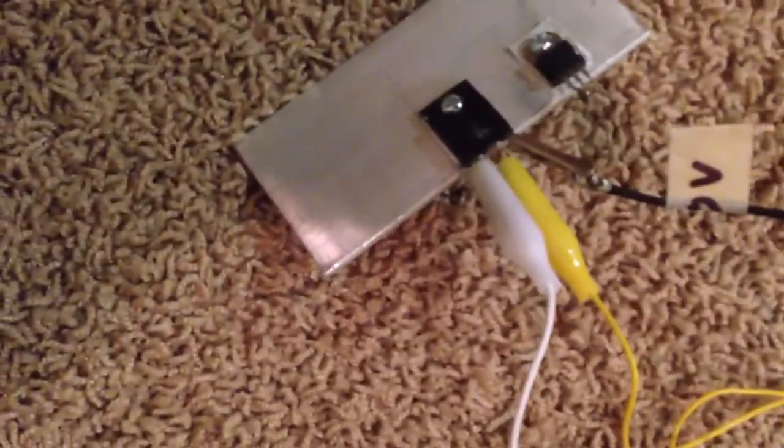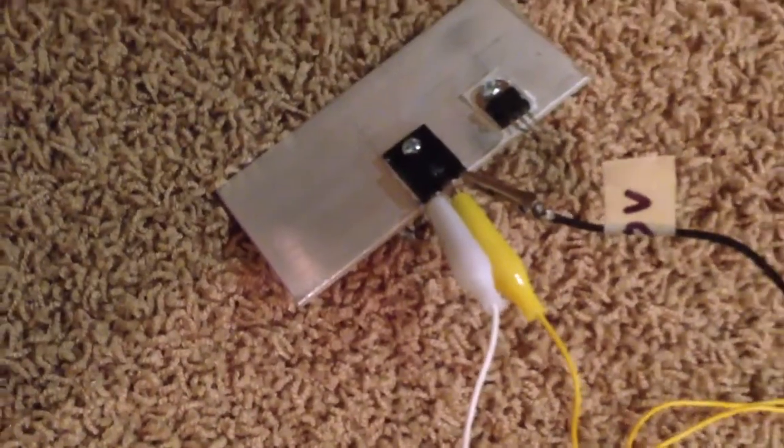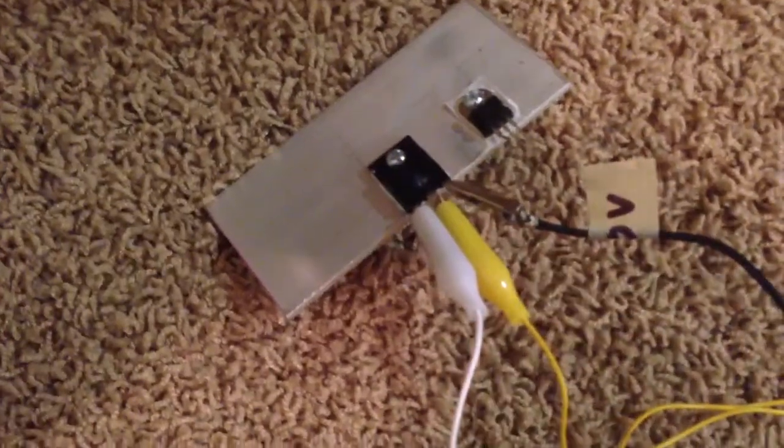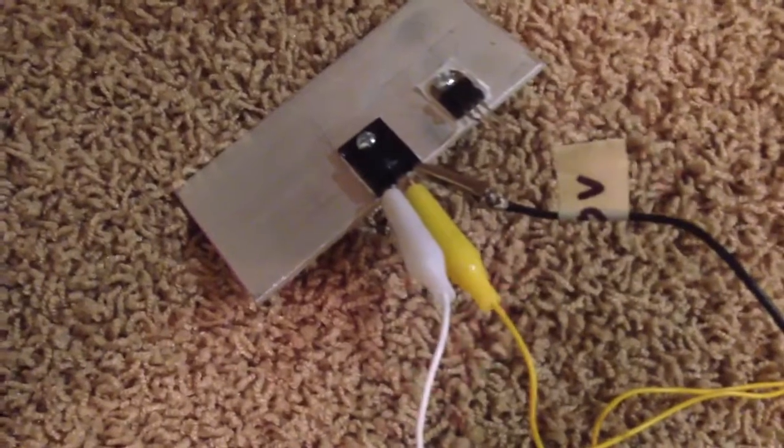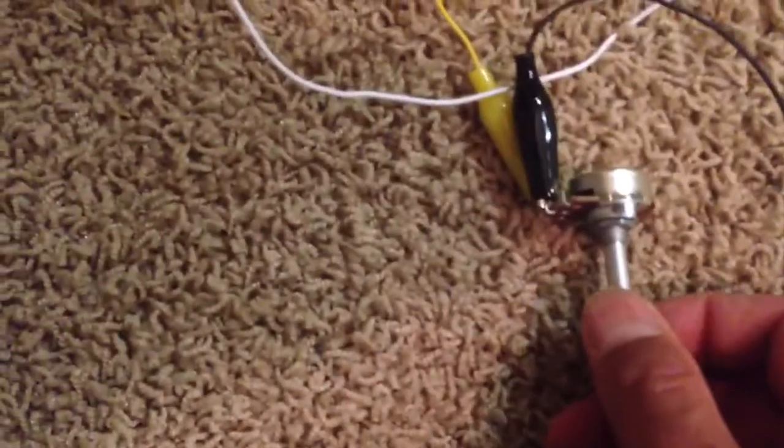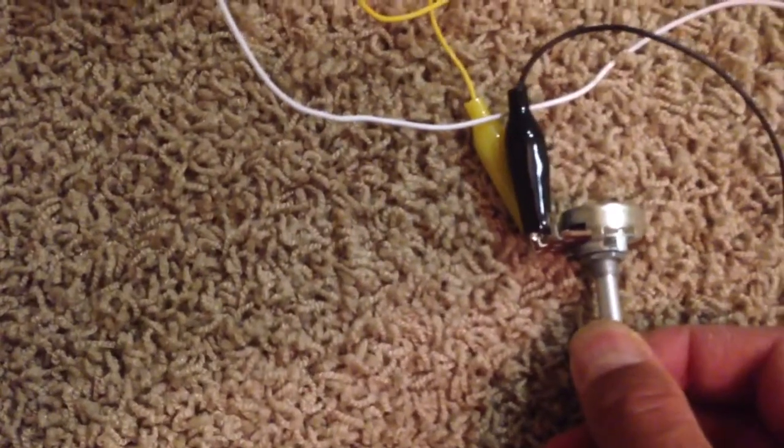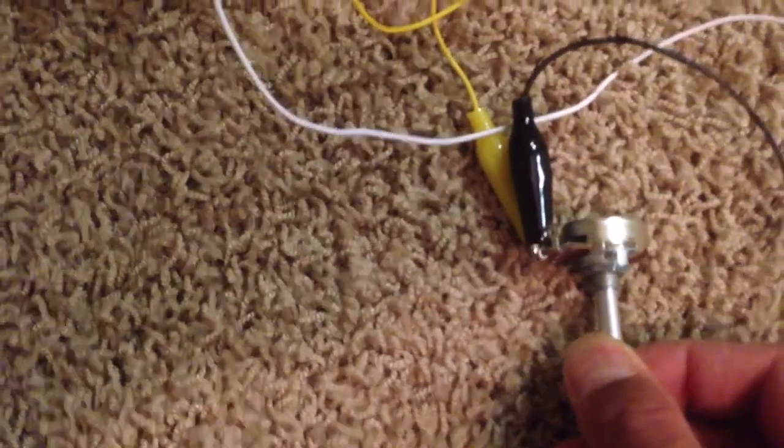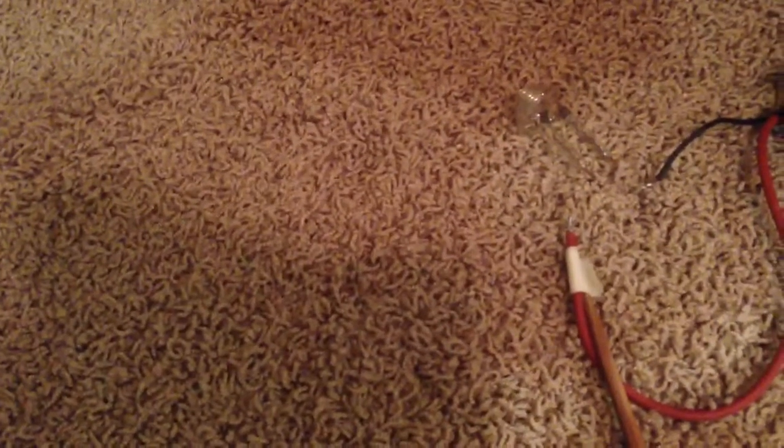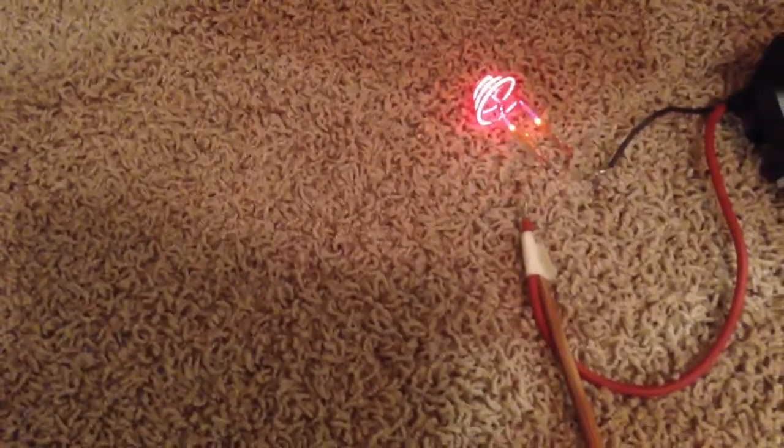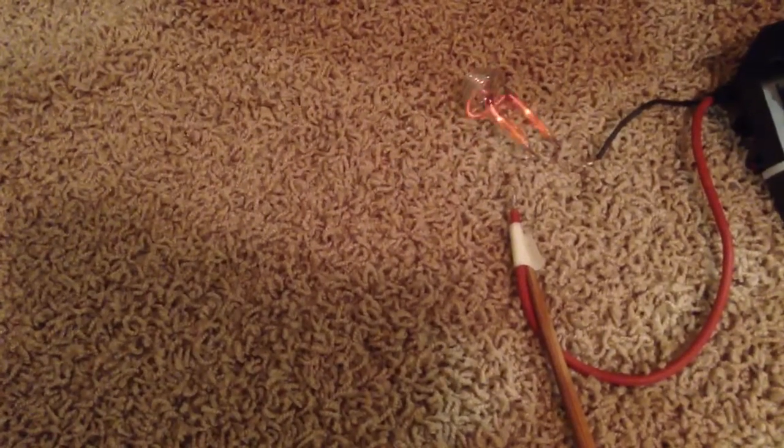This is some good output using the Darlington transistor, the BU808DF. Now we're going to try the TIP31C and look for the difference. I noticed with the Darlington that it only works at low resistances. When I turn it up even a little bit, I completely lose output and oscillation. The transistor itself is just warm.